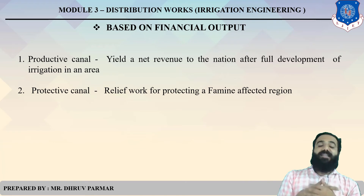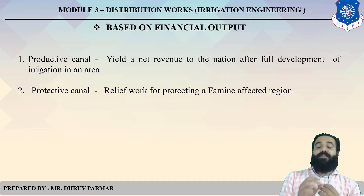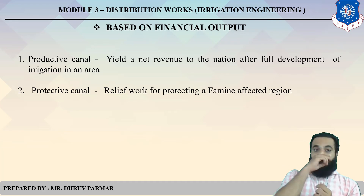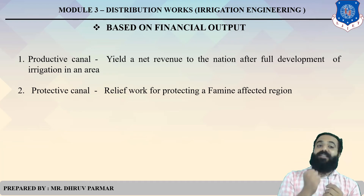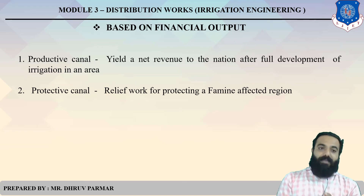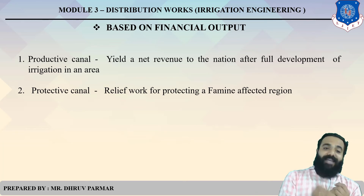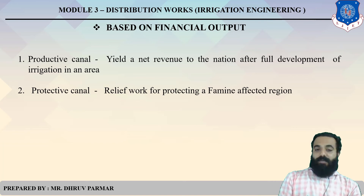Based on financial outcomes, there are two types: Productive and Protective. A Productive Canal is one that yields a net revenue to the nation after full development of irrigation management. For example, the Narmada Canal is a Productive Canal — many farmers benefit from it and pay taxes to the government. A Protective Canal is one that protects from famine and flood.